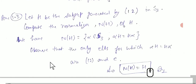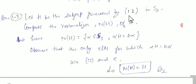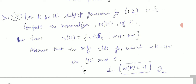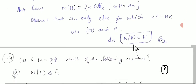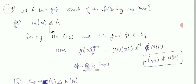For the third question, let H be the subgroup generated by (1,2) in S3. We consider the normalizer of H in S3. Observing which elements α satisfy αH = Hα, we check all elements of S3: E, (1,2), (1,3), (2,3), (1,2,3), and their conjugation with H.